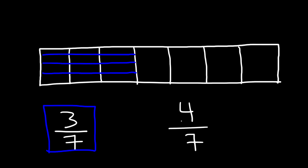four of those seven parts are not shaded, so four sevenths of the rectangle remains unshaded. Now let's look at another example. Let's say we have a square and we're going to break up the square into a total of eight parts.